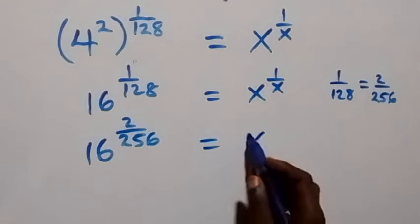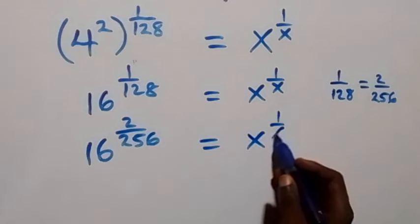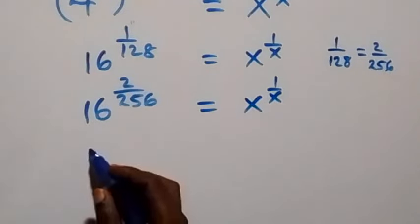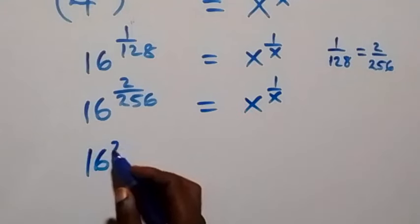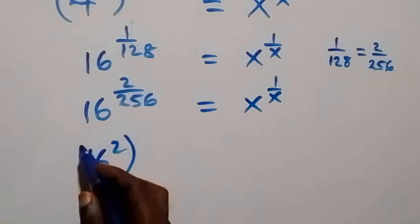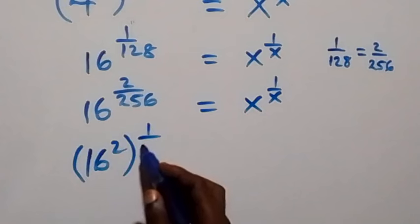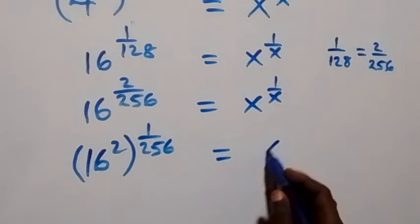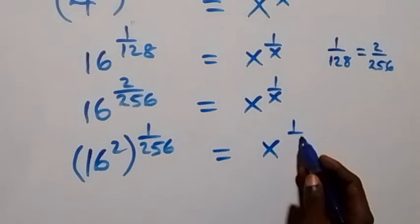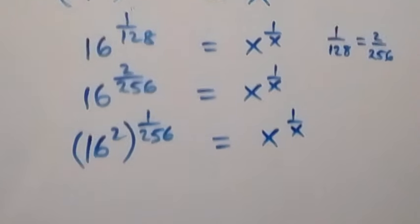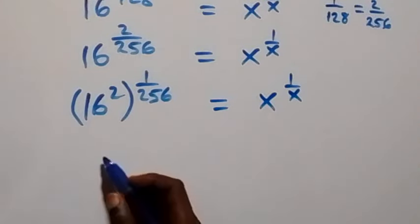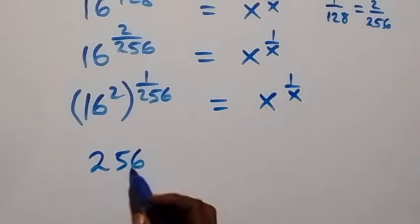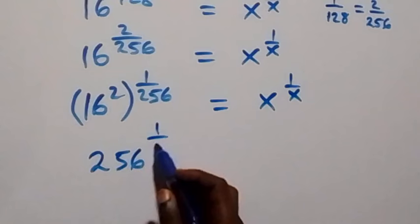Similarly, 1 over 128 is the same as 2 over 256. So we have 16 raised to power 2 over 256 equals x raised to power 1 over x. This is 16 squared, raised to power 1 over 256. And 16 squared is 256, so we get 256 raised to power 1 over 256 equals x raised to power 1 over x.